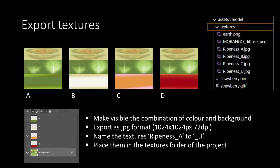By making just one of the layers visible in combination with the original as the background we can export our four textures. We name them ripeness underscore A, B, C, and D. They have the JPEG format and are stored in our textures folder, ready for use in our texture loader.